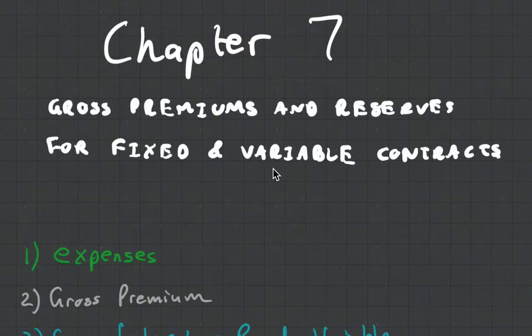Hey guys, it's MJ, the Student Actory, and this is CT5 Chapter 7, the introduction to the chapter which is called Gross Premiums and Reserves for Fixed and Variable Contracts.